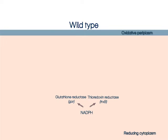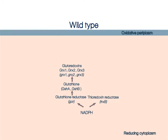In the glutaredoxin pathway, glutathione reductase, or GOR, reduces the enzymes GshA and GshB, which in turn synthesize glutathione. Glutathione then maintains the glutaredoxins in their reduced state, thereby reducing any disulfide bond formed.